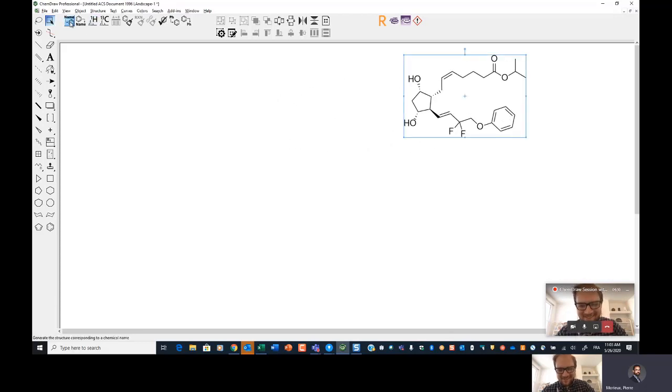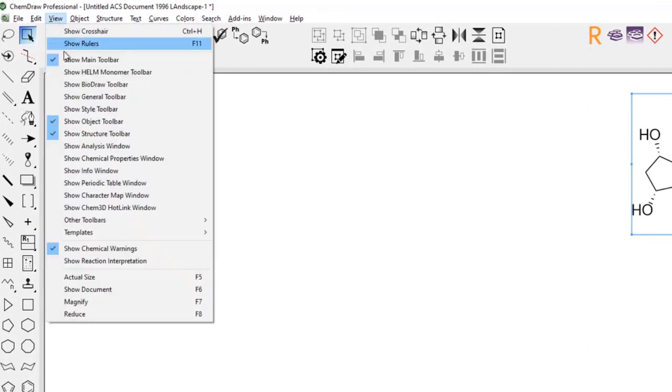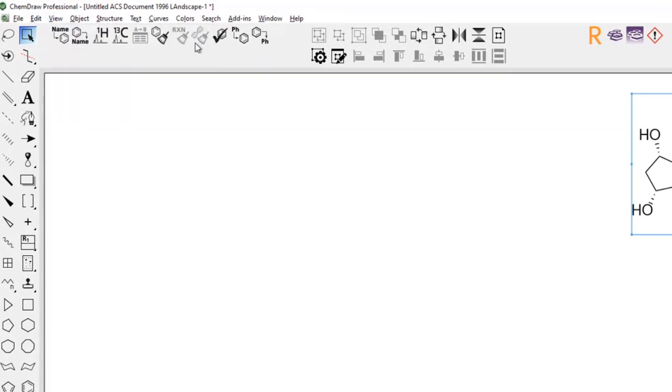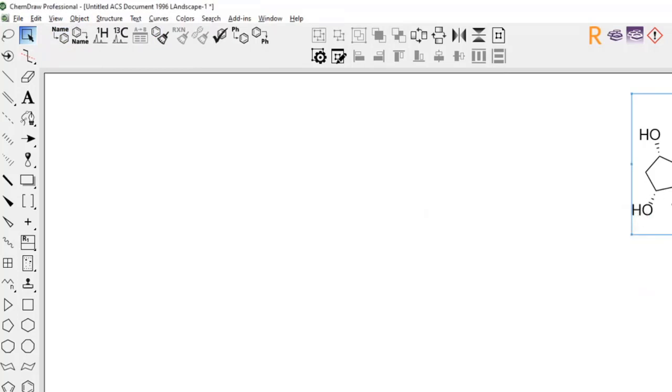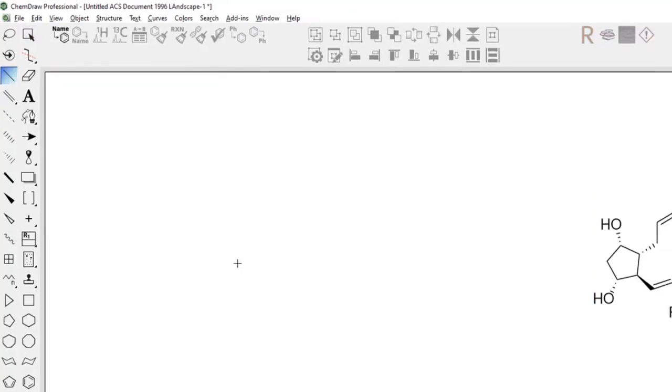Name to structure, which is this guy here. So view, show structure toolbar, and then name to structure, or Control-Shift-N, or Command-Shift-N on the Mac. Okay. Now, how would you, how could you do this?